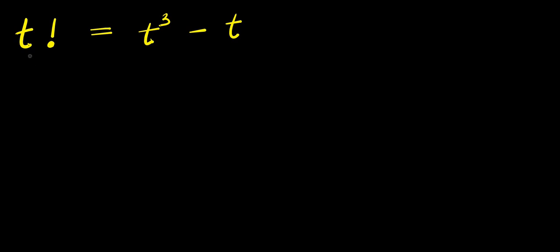Hello, how to solve this: t factorial equals t to the power 3 minus t. You are solving for the value of t that satisfies this equation. Now before we proceed, we need to start by answering what actually is a factorial.